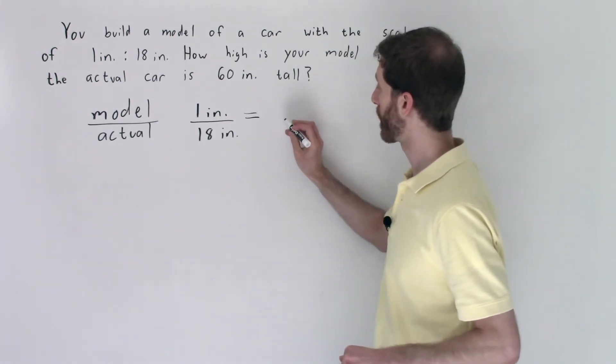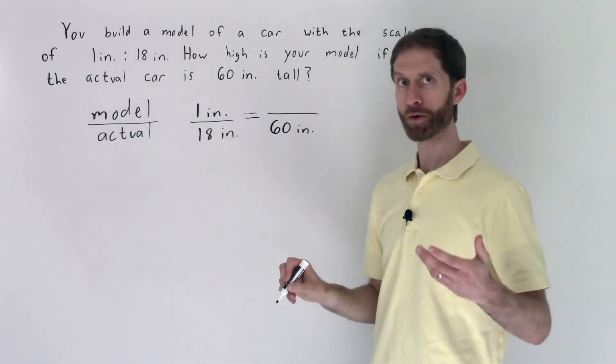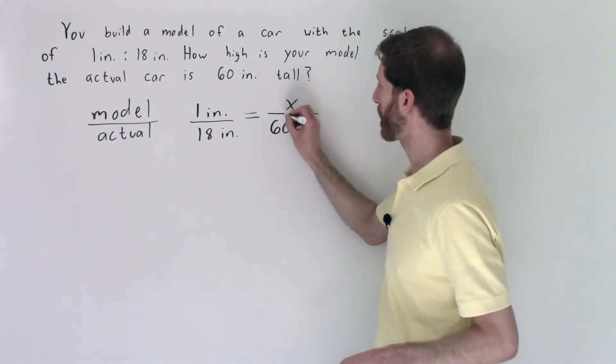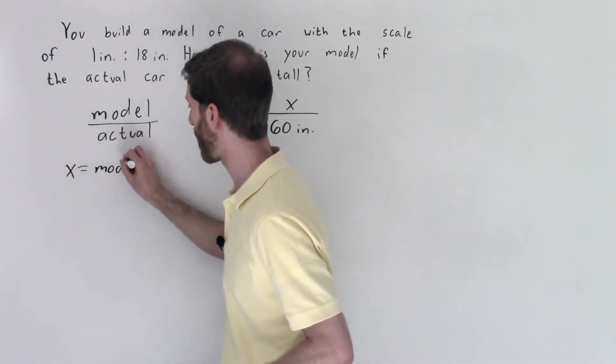So we know that this ratio will be equal to another ratio where the actual height is 60 inches, but the unknown amount is the model. So I'll put x right there, and we'll define our variable where x equals the model height.